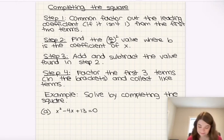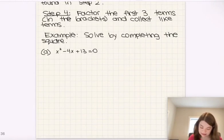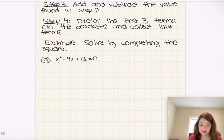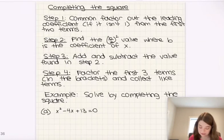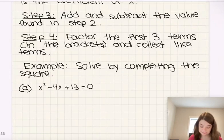The first step is to common factor out the leading coefficient, if it isn't one, from the first two terms. You'll notice in our first example here, the leading coefficient is one, so we can actually just skip that step.